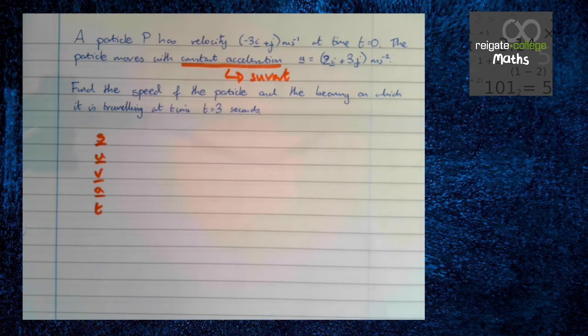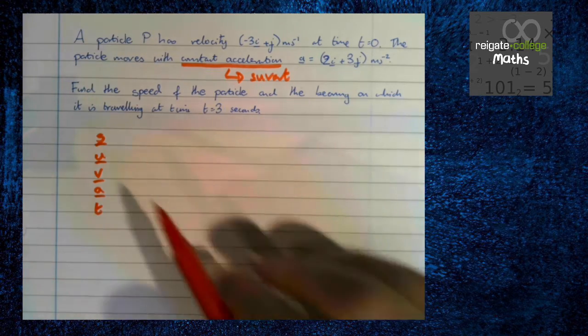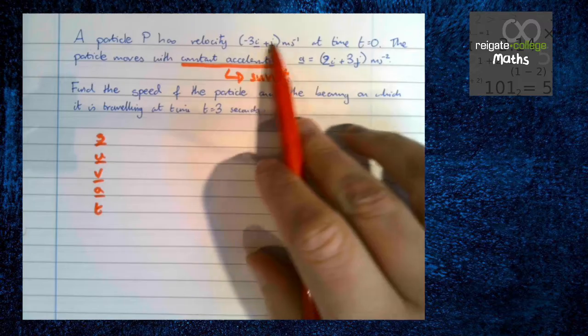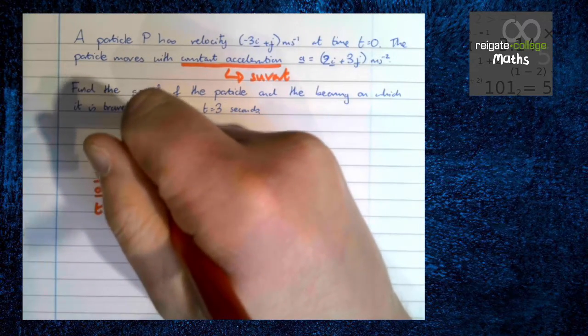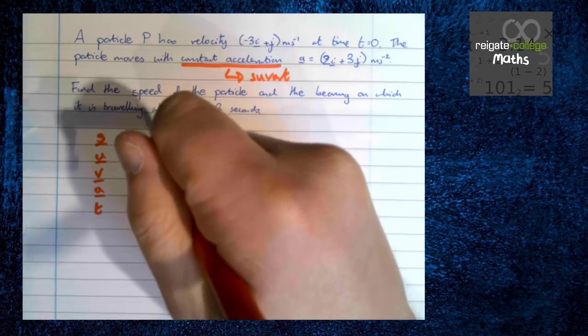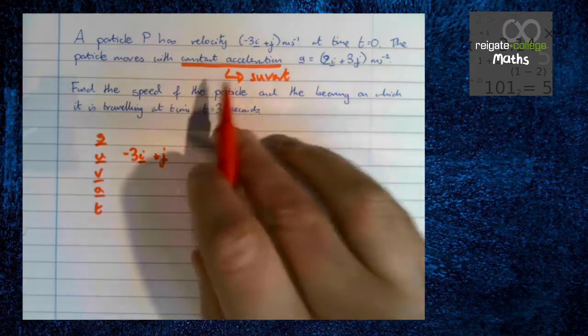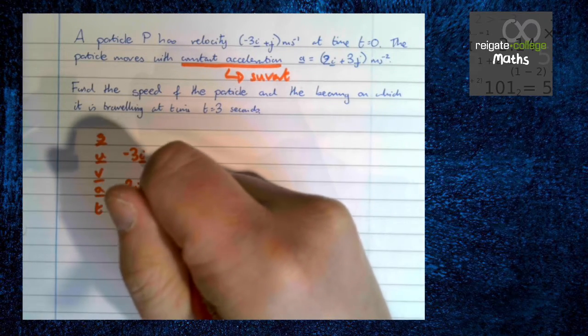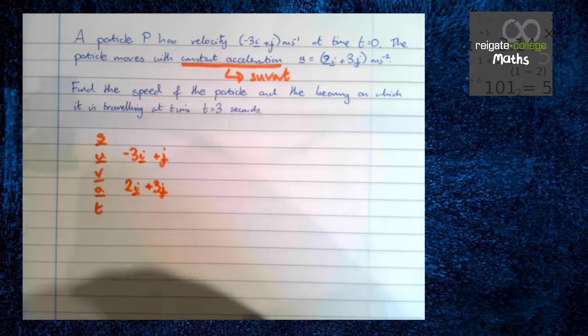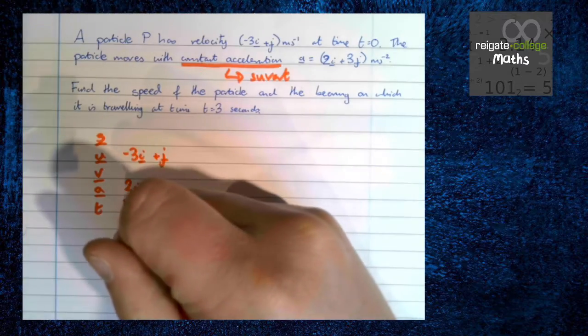Okay, so we can immediately start with our SUVAT writing it down. Now be careful, you must underline S, U, V, and A because they are vectors. So we have our velocity is this at time t is 0, so that's our initial velocity minus 3i plus j. Moves constant acceleration 2i plus 3j, and we're told its time is 3.